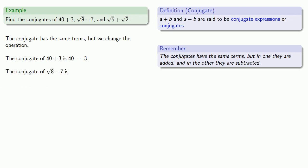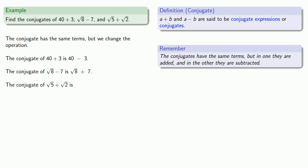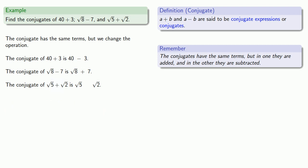The conjugate of square root of 8 minus 7 will have the same terms — square root of 8 and 7 — but since we're subtracting here, our conjugate will be an addition. The conjugate of square root of 5 plus square root of 2 has the same terms — square root of 5 and square root of 2 — but instead of an addition we'll have a subtraction.